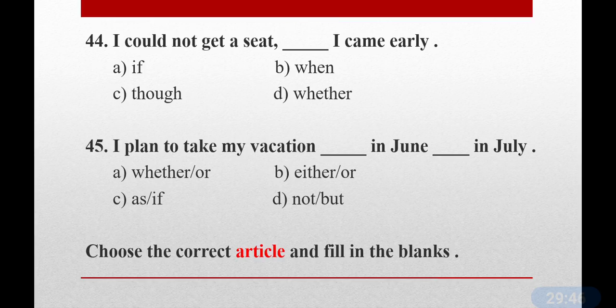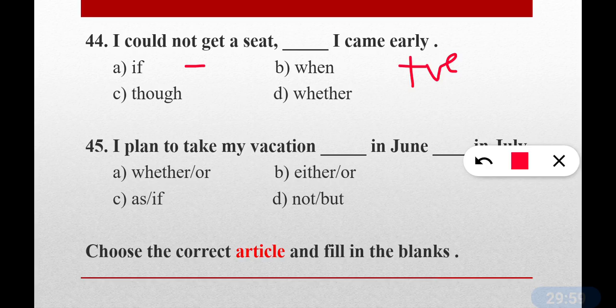Question number forty-four: I could not get a seat dash I came early. When the first part of a sentence is negative and the second is positive, we join them with 'though'. Option C is correct — though I came early, I could not get a seat.